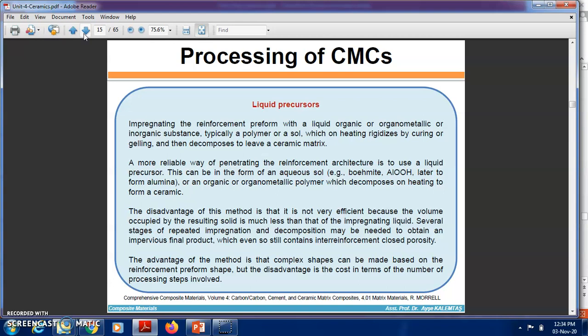The disadvantage of this method is it is not very efficient because the volume occupied by the resulting solid is much less than that of the impregnated liquid. Several stages of repeated impregnation and decomposition may be needed to obtain a final product, which even so still contains inter-reinforcement porosity. The advantage is that complex shapes can be made based on the reinforcement preform, but the cost is in terms of the number of processing steps involved.